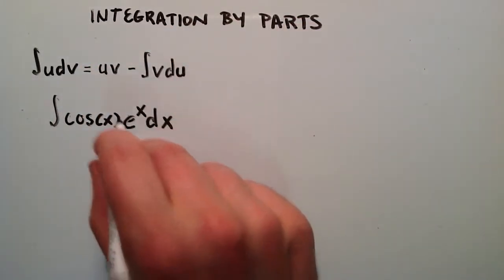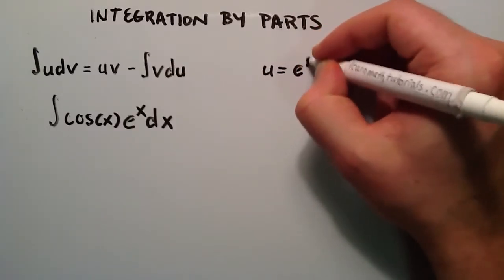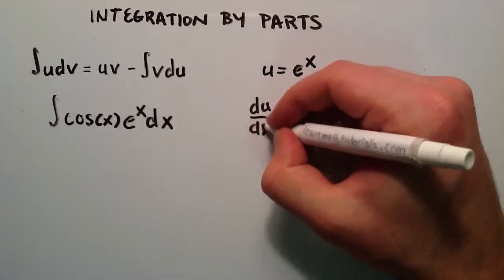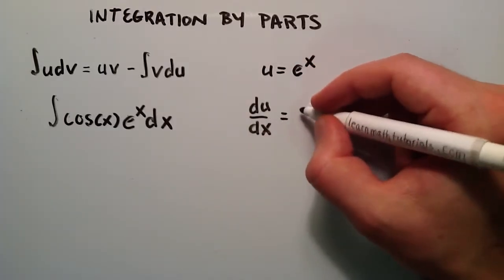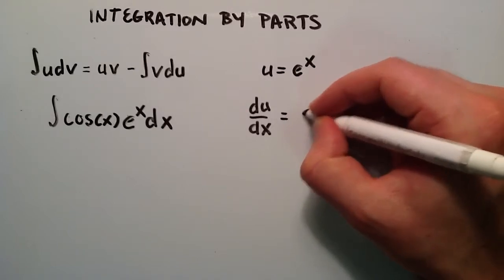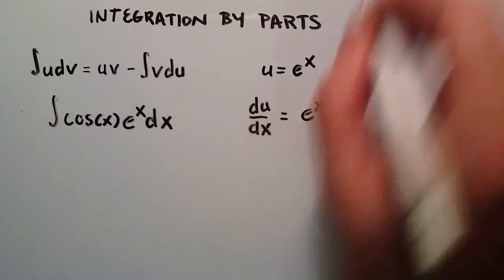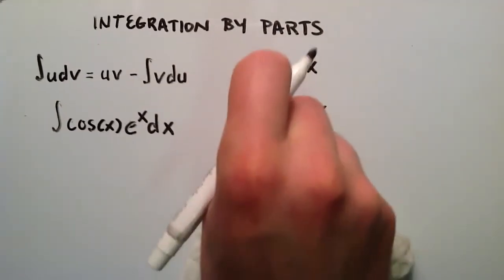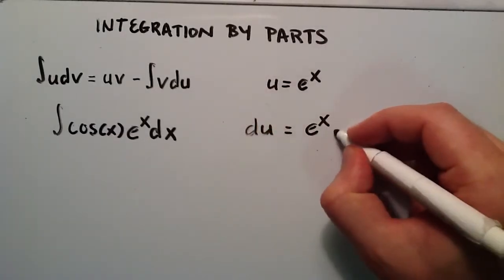So for my u, I'm just simply going to pick e to the x, which means that du over dx, taking the derivative of u with respect to x, is equal to taking the derivative of e to the x with respect to x. And that simply equals e to the x. And we can multiply the left and right hand side by dx. And that would just simply give us du is equal to e to the x dx.